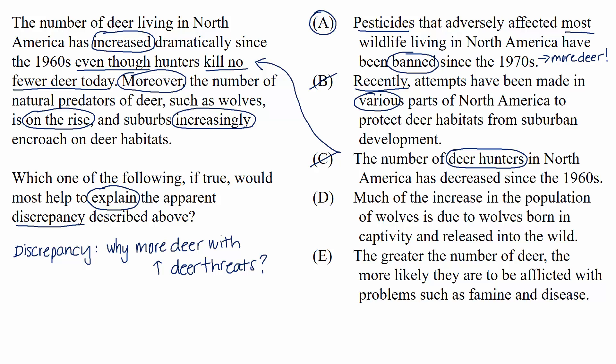Choice D: much of the increase in the population of wolves is due to wolves born in captivity and released into the wild. This is explaining why there are more wolves, but not at all why there are more deer. We can rule this choice out since our task is to explain the increase in deer.